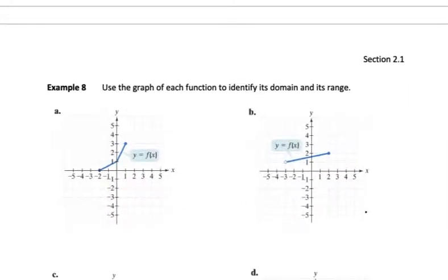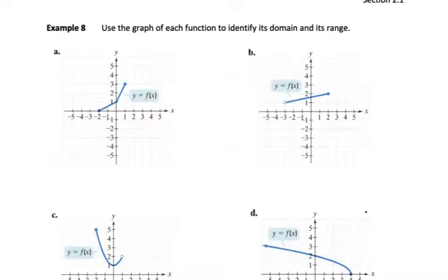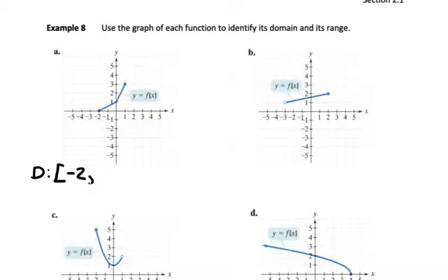Next we're going to look at example 8, which says to use the graph of each function to identify its domain and range. Starting with part A — for the domain, the x-coordinates go from negative 2 up to 1. Both are included because we have solid circles at both ends. So we use square bracket, negative 2, comma, 1, square bracket.